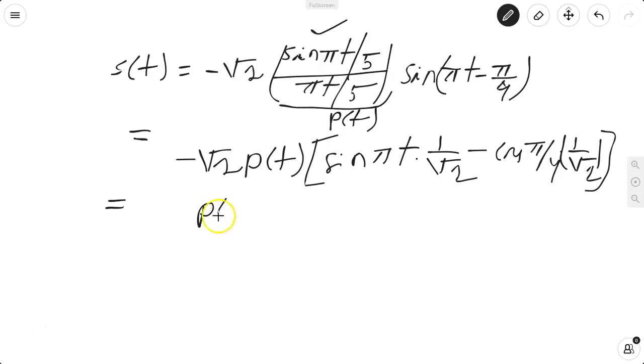So you have √2 to cancel. So p(t)cos(πt) minus p(t)sin(πt).